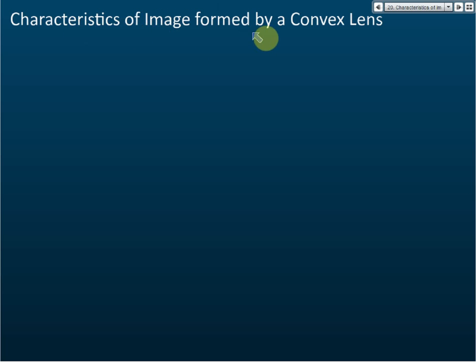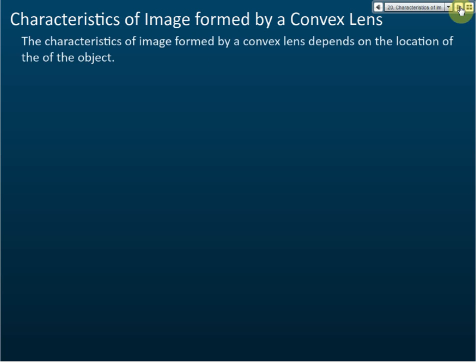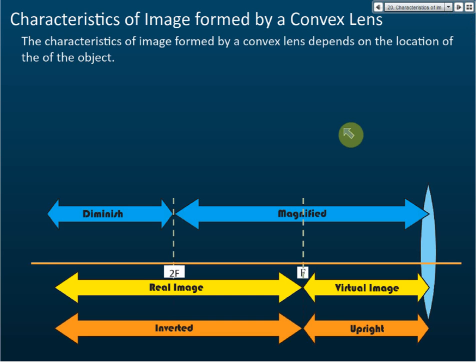The characteristics of the image formed by the convex lens depend on the location of the object — where you put the object determines the characteristics of the image. You must memorize this.